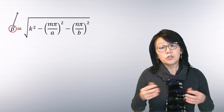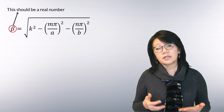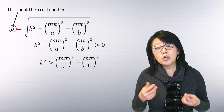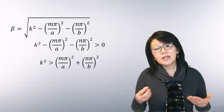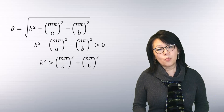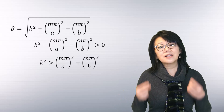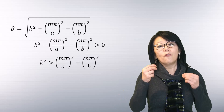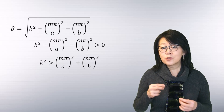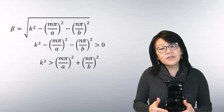Substituting the values for kx and ky gives this expression. For a propagating wave, the value of the propagation constant must be real, and for the propagation constant to be real, the value of k squared must always be greater than the sum of the squares of the wave numbers along the x and y axes.